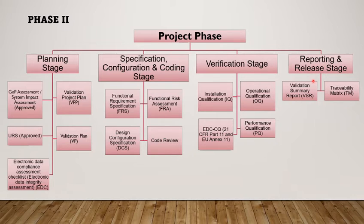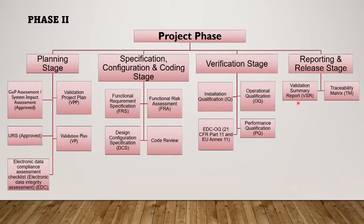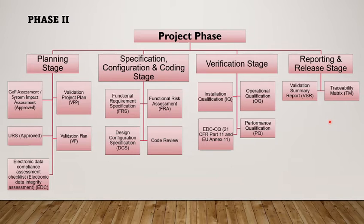The fourth stage is reporting and release. All activities performed during the project phase shall be summarized in this stage. The validation summary report states the validation overview and IQ/OQ/PQ testing summary, details of all activities performed, any deviations observed and CAPA taken, risk assessment against deviations observed, and also includes a statement of fitness for intended use. Once the validation summary report is prepared and approved, the system can be released for routine activity. Prior to release, ensure availability of the system inventory index, system owner, end user training, users log, system operating procedure, and maintenance and calibration procedures. A traceability matrix shall also be prepared to ensure that all applicable requirements mentioned in the URS and FRS have been verified.